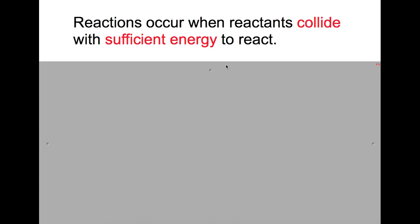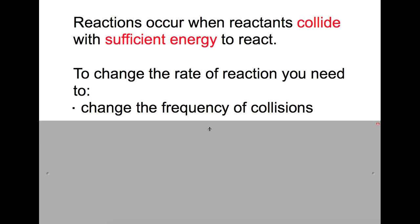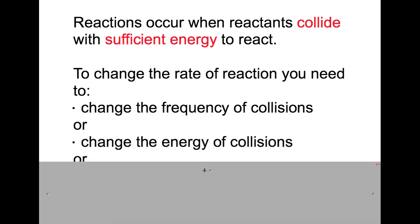Reactions occur when reactants collide with sufficient energy to react. So to make the rate of reaction different you need to either change the frequency of the collisions or change the energy of the collisions, or do both. There are four ways we can do this.